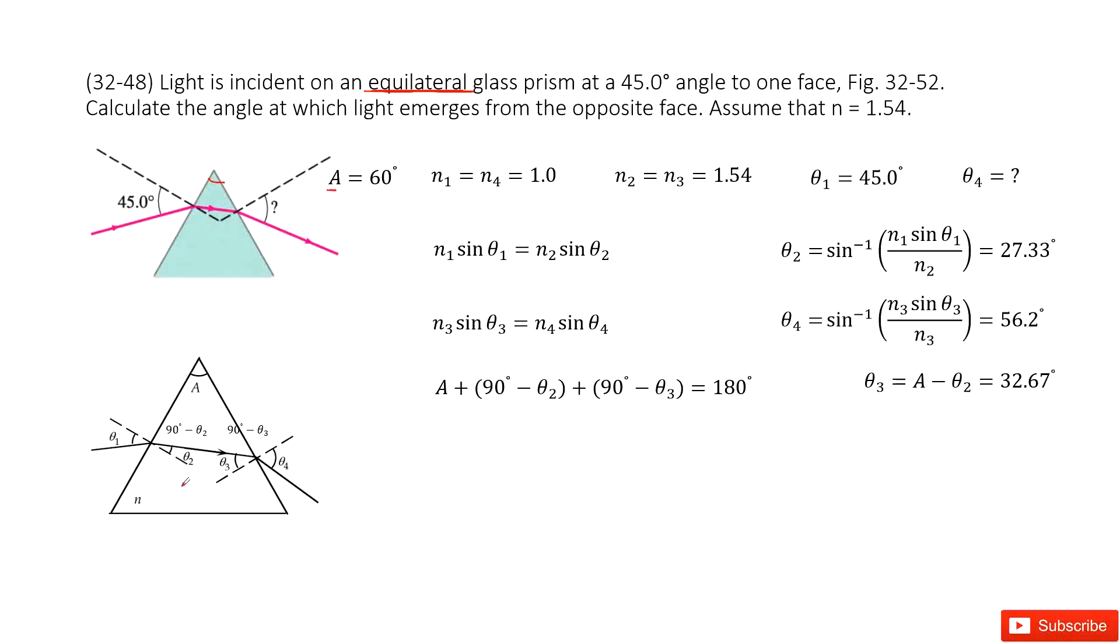We can draw a picture to mark all the quantities. Now we know the incident wave. So we can say this is n1, this is n2, this is n3, this is n4.